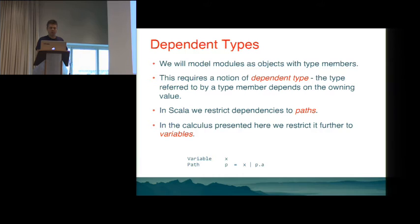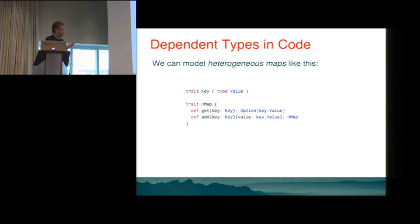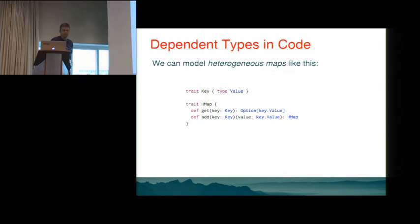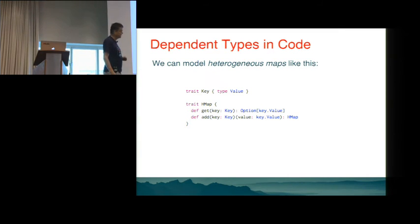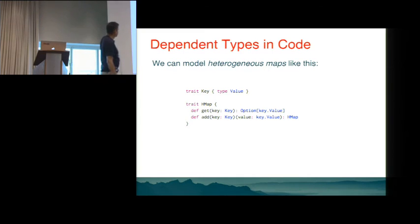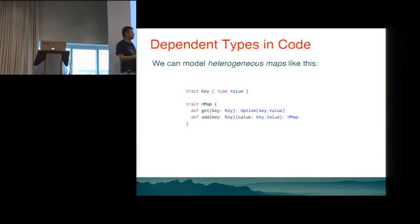Before going into the theory, let me show some code snippets explaining path-dependent types. The example is heterogeneous maps — maps where, given a key, you know what the type of the corresponding value is. I model it like this: the trait Key has a type member called Value, and then I have a trait HMap with a get method that takes a key and gives back optionally a key.Value — that's a path-dependent type — and an add method.